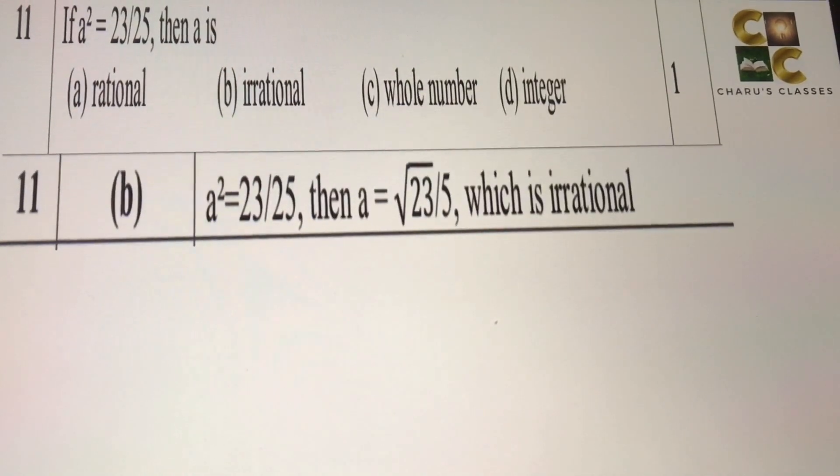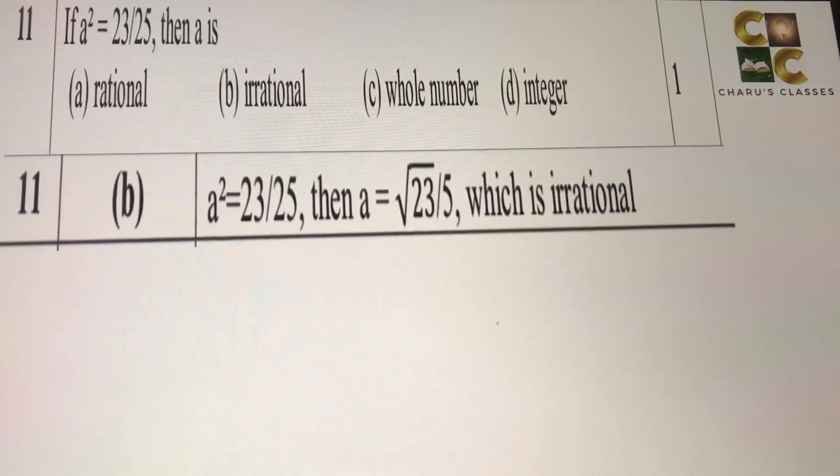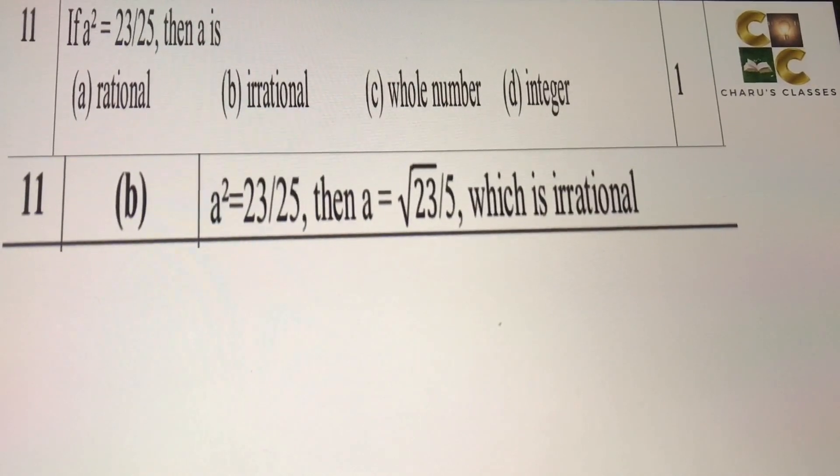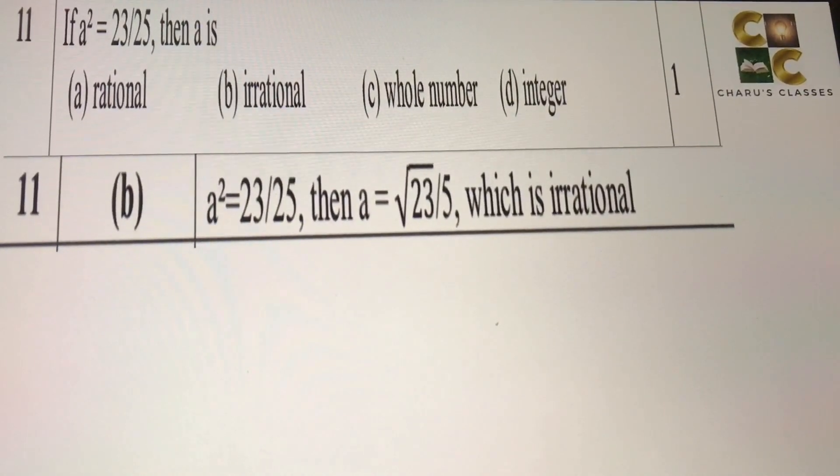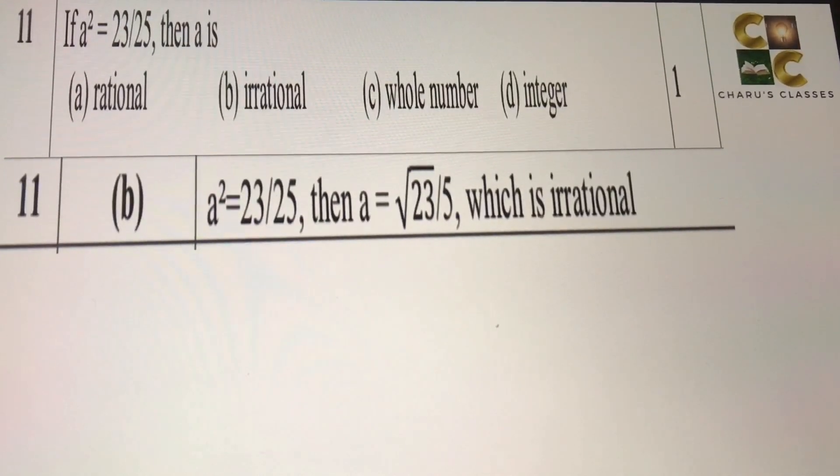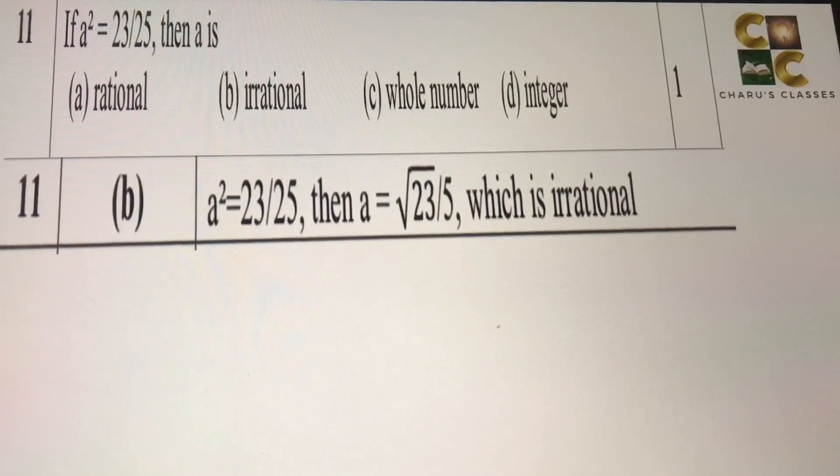Eleventh question: If a square is 23 by 25, then a is? If a square is 23 by 25, then a is equal to root 23 by 5. So root 23, it is an irrational number. So the answer is irrational.